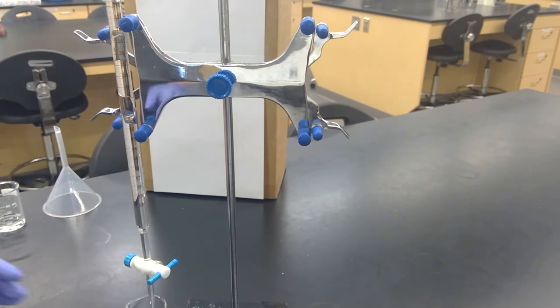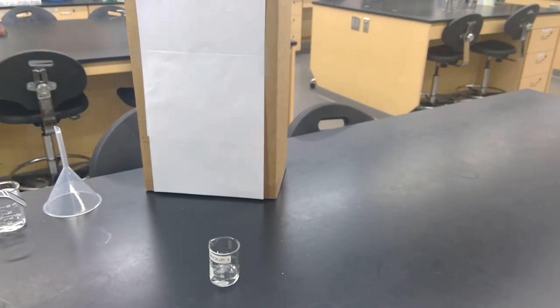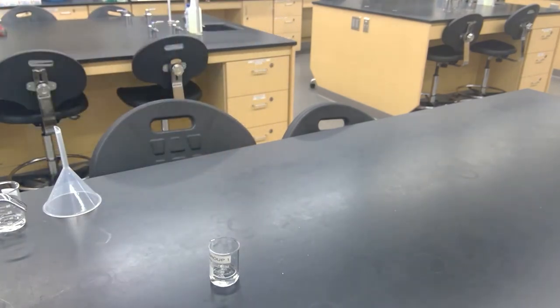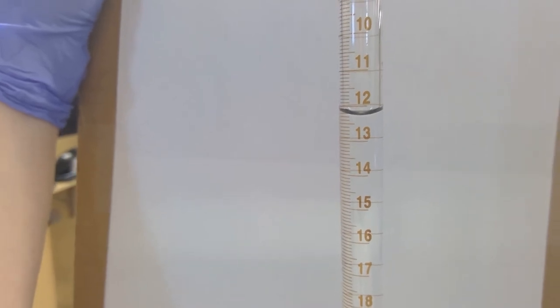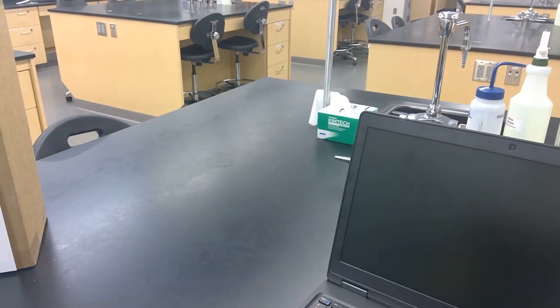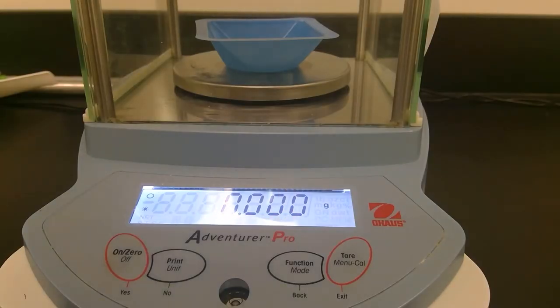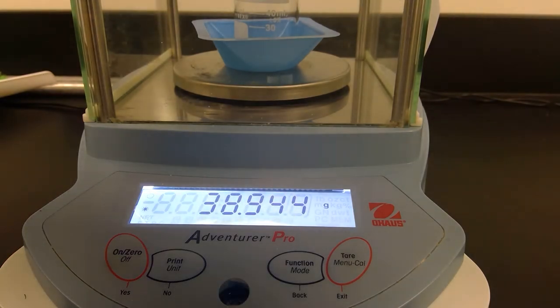Now you'll record the final volume on your burette, and now we will go and measure the mass of the beaker with the water in it again. Close the lid and record the volume, or the mass, of your beaker with the water in it.